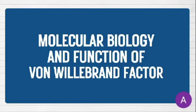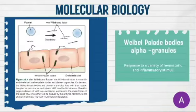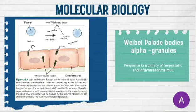Regarding the molecular biology and function of von Willebrand factor: von Willebrand factor is the largest molecule in human plasma. It is synthesized in the endoplasmic reticulum in endothelial cells and stored in their cytoplasmic Weibel-Palade bodies. It is also synthesized in megakaryocytes and stored in the alpha granules of platelets. Weibel-Palade bodies and alpha granules release von Willebrand factor in response to a variety of hemostatic and inflammatory stimuli.